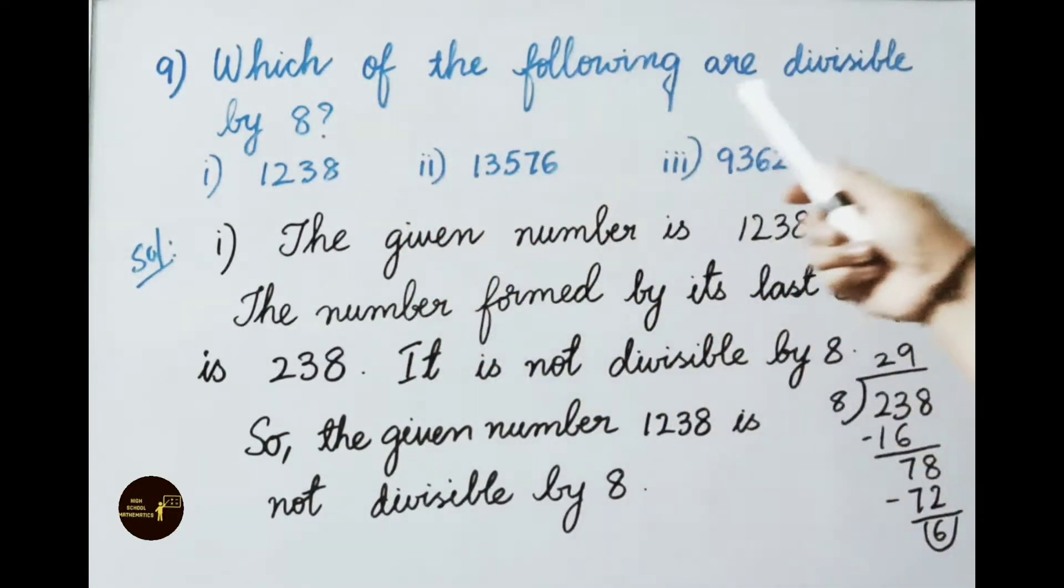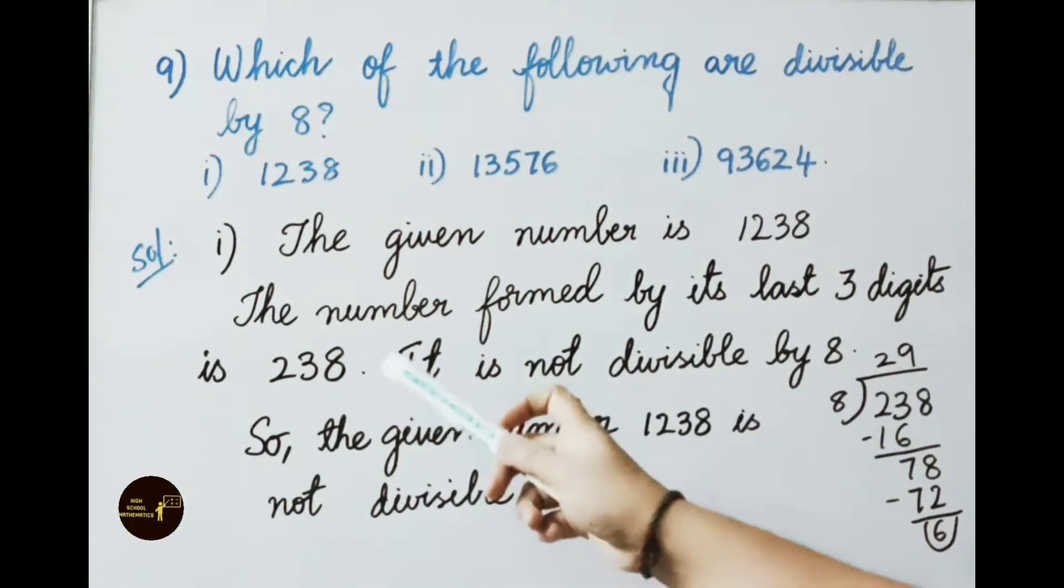See the 9th question. Which of the following are divisible by 8? First one, 1238. See the solution. The given number is 1238. A number with 4 digits or more digits is divisible by 8 if the number formed by the last 3 digits is divisible by 8. The divisibility for numbers 1 digit, 2 digit, or 3 digits we have to check by using the actual division. Let us see here. The number formed by its last 3 digits is 238. Now let us check with actual division. 8 table, we have to check 238 divisible or not. 8 twos are 16. 23 minus 16 is 7. Write on the next number 8, so the number is 78. 8 table, 8 nines are 72. 78 minus 72 leaves a remainder 6. So it is not divisible by 8. So the given number 1238 is not divisible by 8.